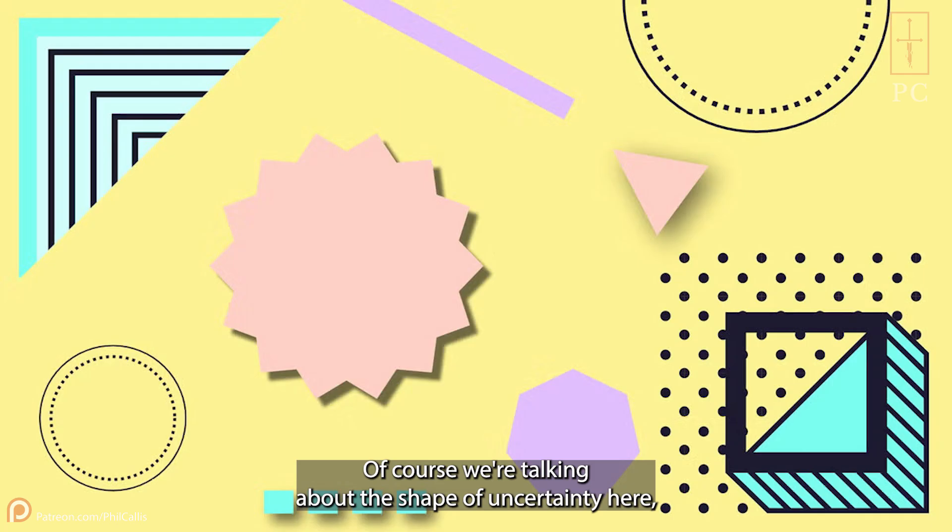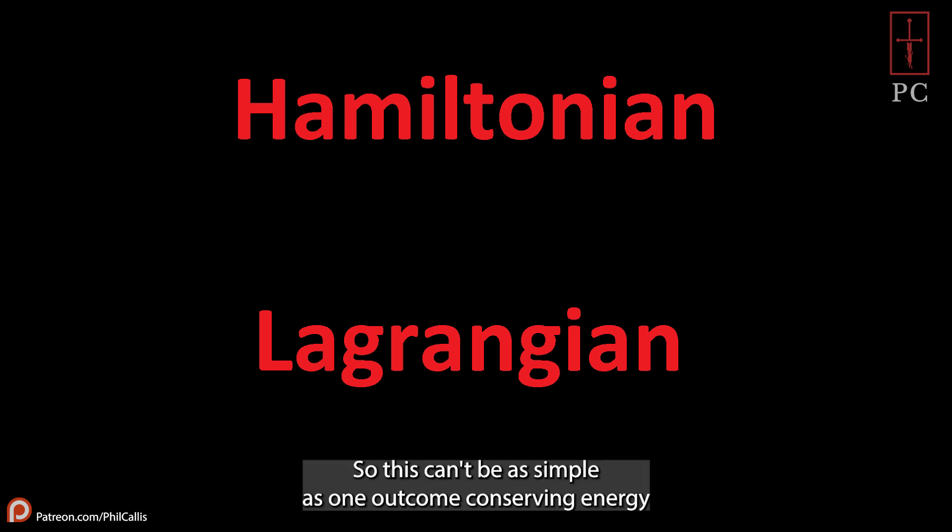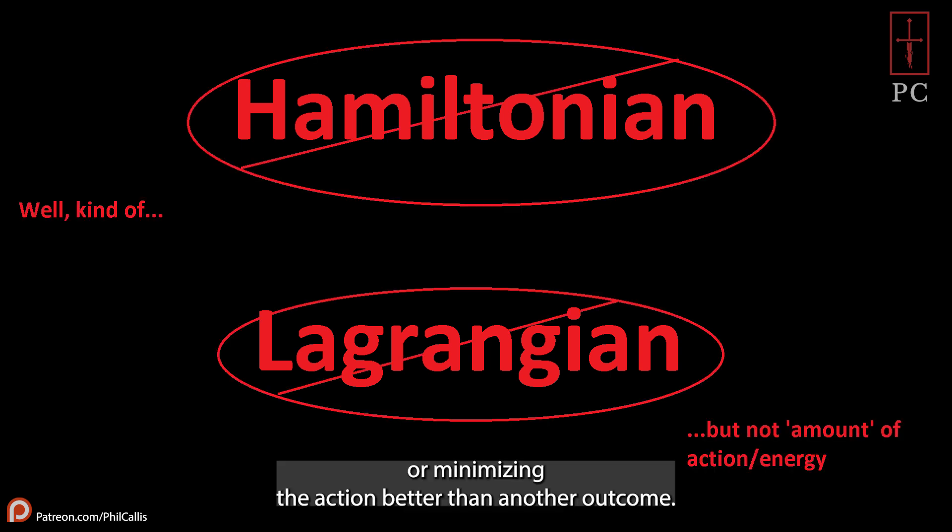Of course, we're talking about the shape of uncertainty here, not the amount of energy, so this can't be as simple as one outcome conserving energy or minimizing the action better than another outcome.